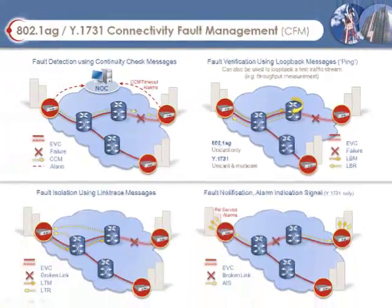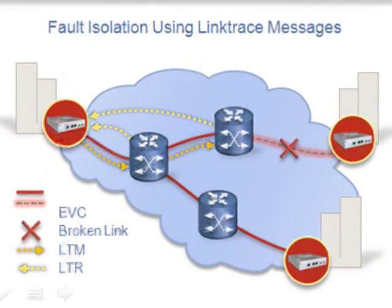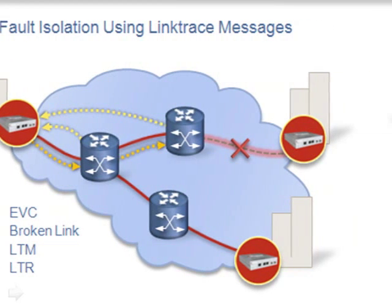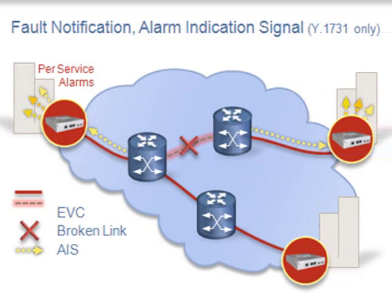The location of a fault can be quickly determined by a link trace message, analogous to the IP traceroute function. When an LTM is sent to a service endpoint, all intermediate nodes respond with a link trace response along the path traveled by the LTM. The returned LTRs, and those not returned, uniquely identify the segment or node where the fault originated. Under normal operating conditions, link trace is also used by network elements to determine the path a service takes throughout the network. This route awareness is stored in a local database to expedite fault isolation and for link protection purposes.